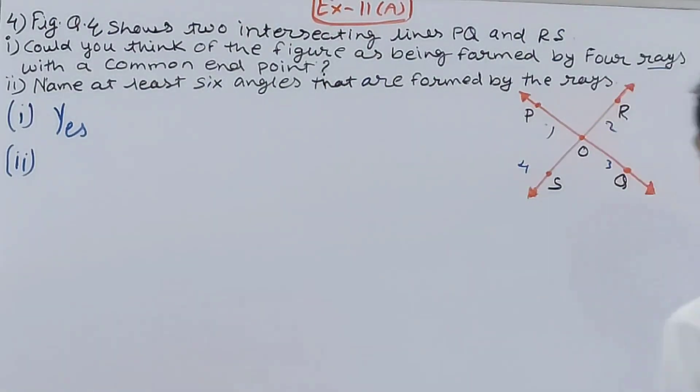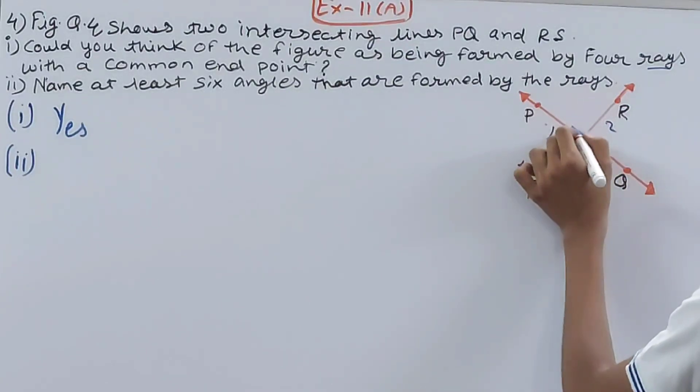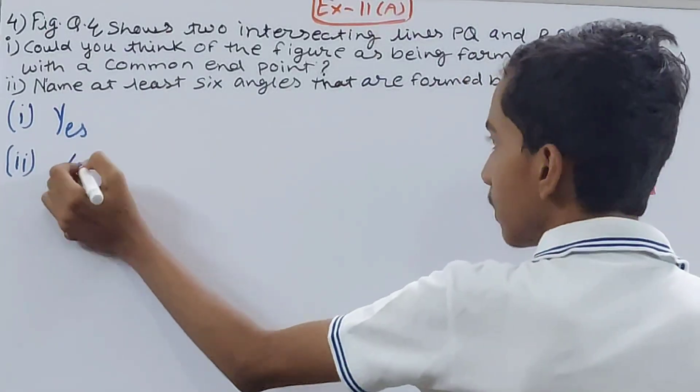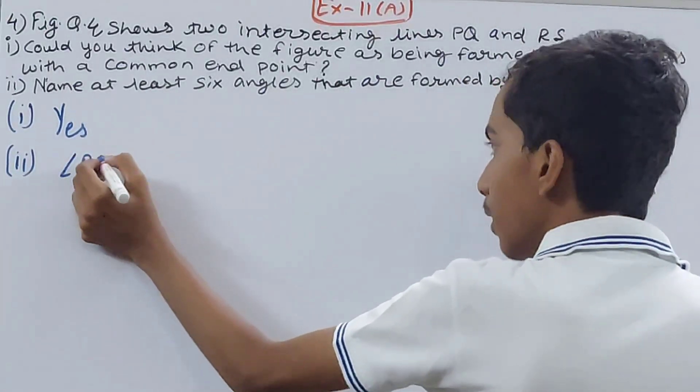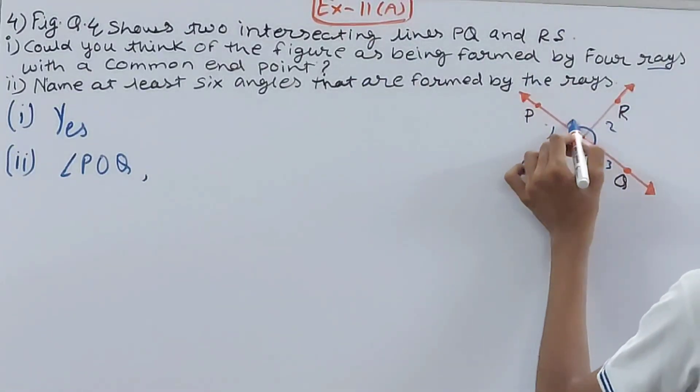So we have to name at least six angles. Very simple. I'll begin from here. My first angle will be angle POQ. Keep marking with me: angle POQ. Second angle will be POR.